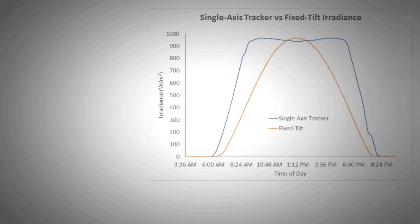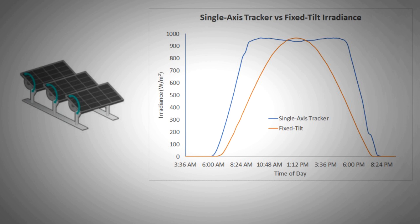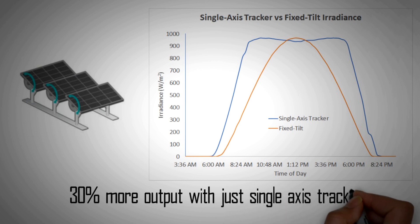Here is a graph that shows how even the output is from a tracking system compared to a stationary system. We can get up to 30% more output with tracking compared to fixed angle systems. One can also notice the uniformity of yield with the tracking system which has its own benefits.